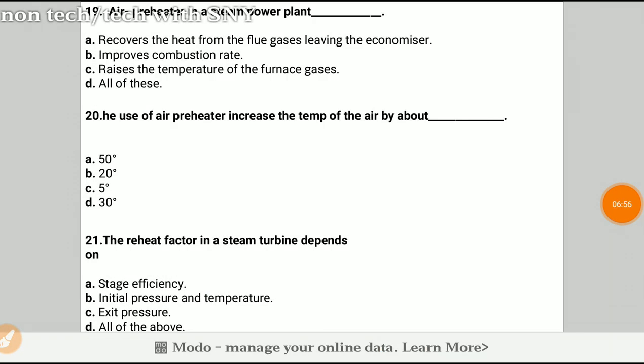Question 19: Air preheater in a steam power plant? The answer will be D, all of the above, which is recovery of heat from the flue gases leaving the economizer, improving combustion rate, and raising the temperature of the furnace gases. Question 20: The use of air preheater increases the temperature of the air by? The answer will be B, 20 degrees.